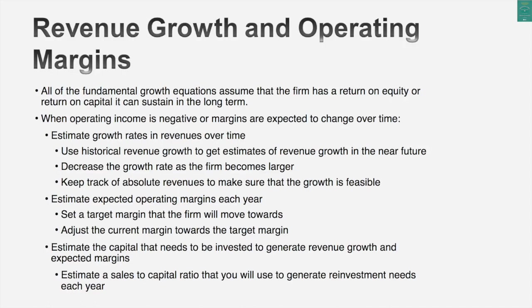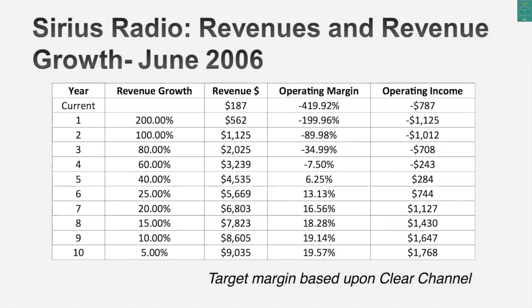Third step: tell me how much you will need to reinvest to get that revenue growth. To do that I use a ratio called the sales-to-capital ratio. It sounds fancy, but here's the way to read it: if your sales-to-capital ratio is 3, for every three dollars in additional revenues I would require investing one dollar in capital. That allows me to estimate reinvestment. Let me take an example to illustrate — I'm going to use Sirius Radio in 2006.